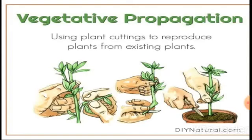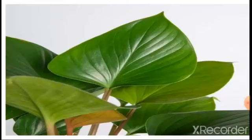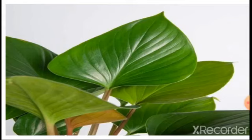Have you heard the word vegetative propagation before? Vegetative propagation is a mode of reproduction in plants in which a vegetative part — like root, stem, and leaves — develops into a new plant under favorable conditions. In asexual reproduction, there is no fusion of male and female gametes — it is an artificial mode, and plants reproduce through vegetative propagation.